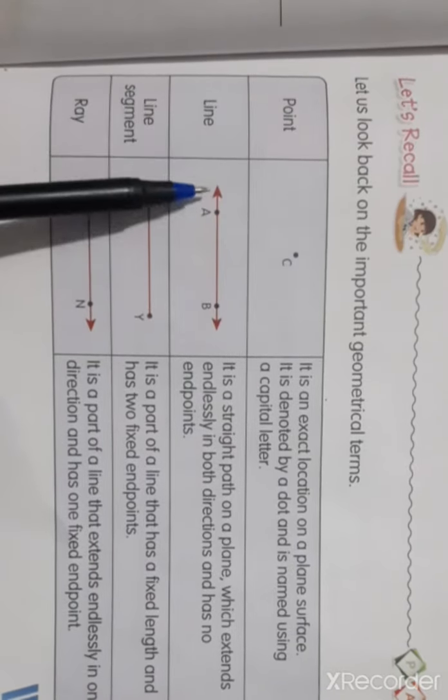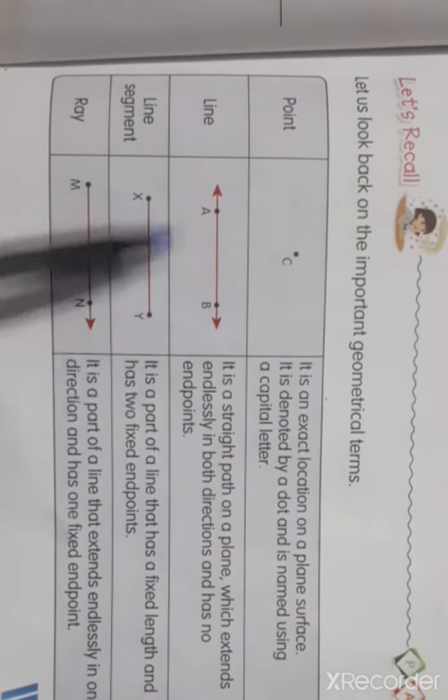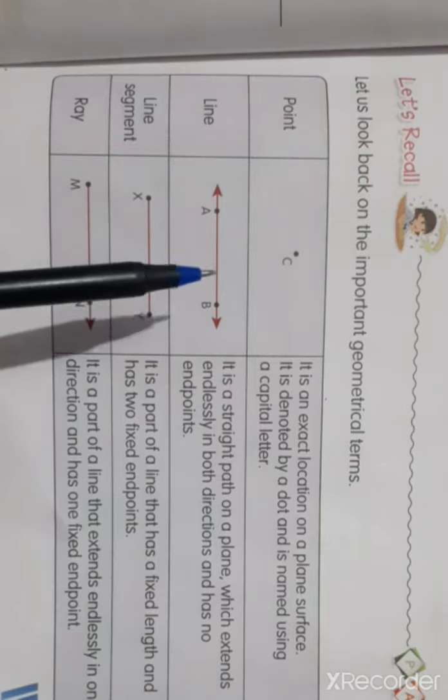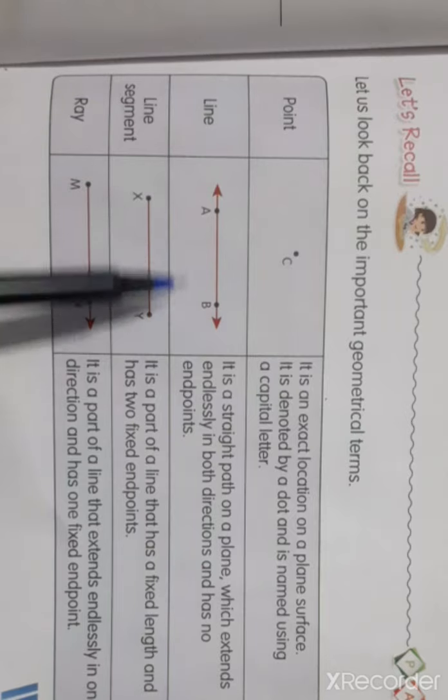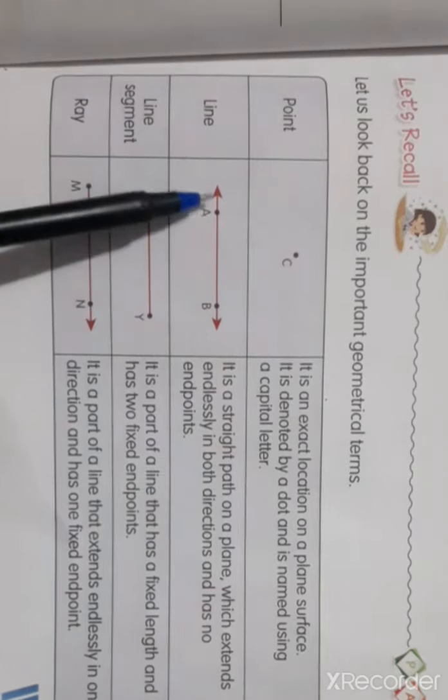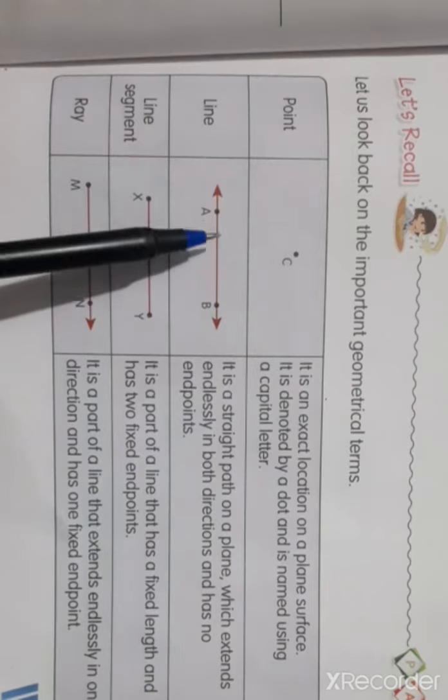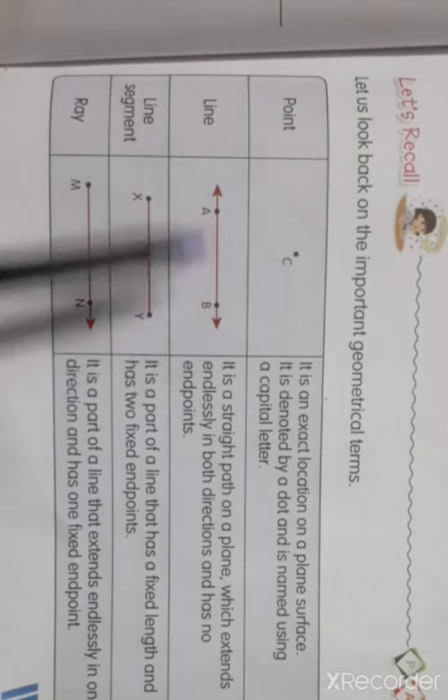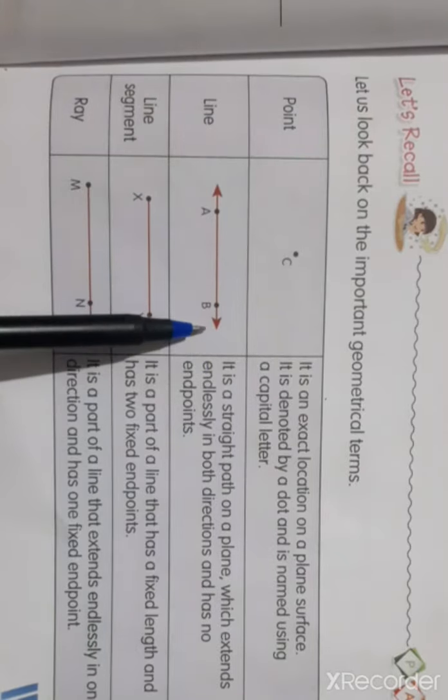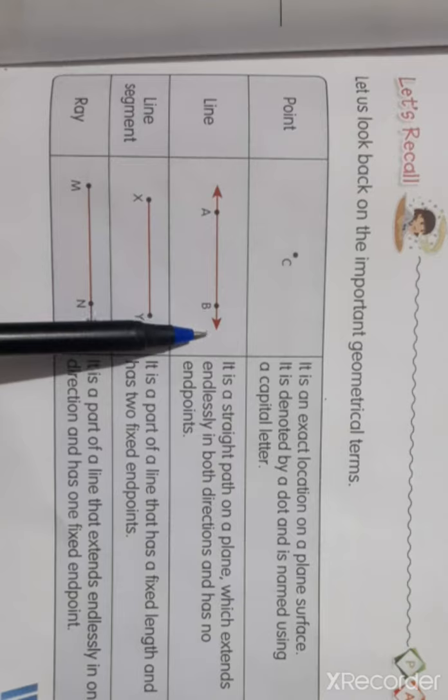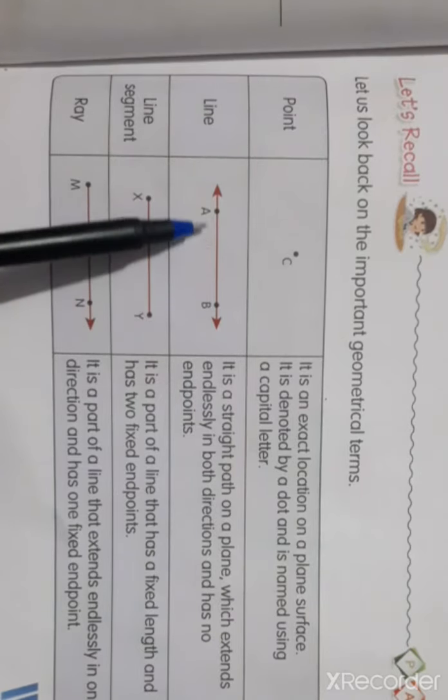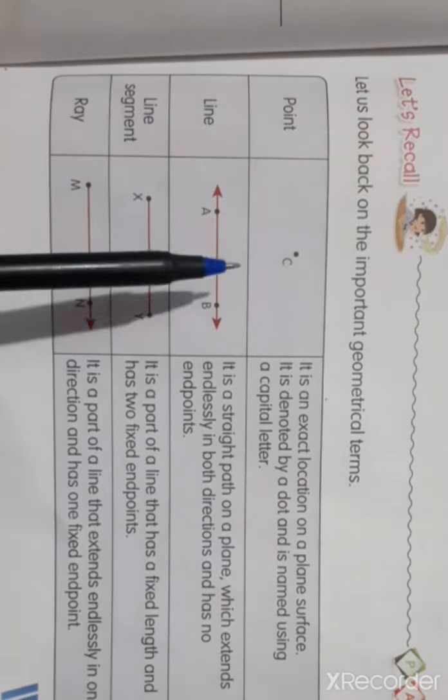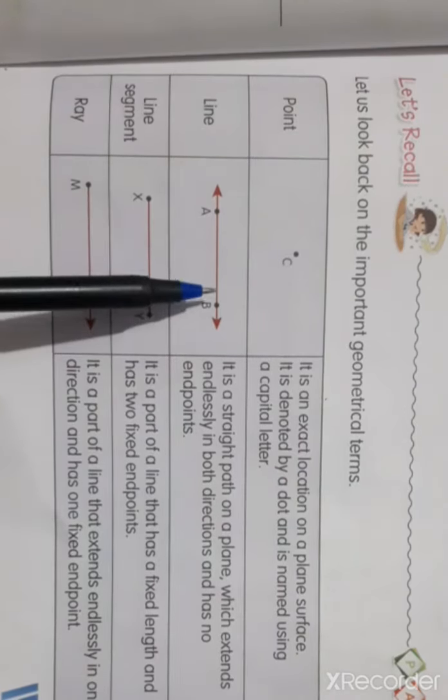Second is line. Line is the straight path on a plane surface. Straight path, which extends and is in both direction, and has no end point. Means, both sides, both directions, it has no end point and it is on plane surface.